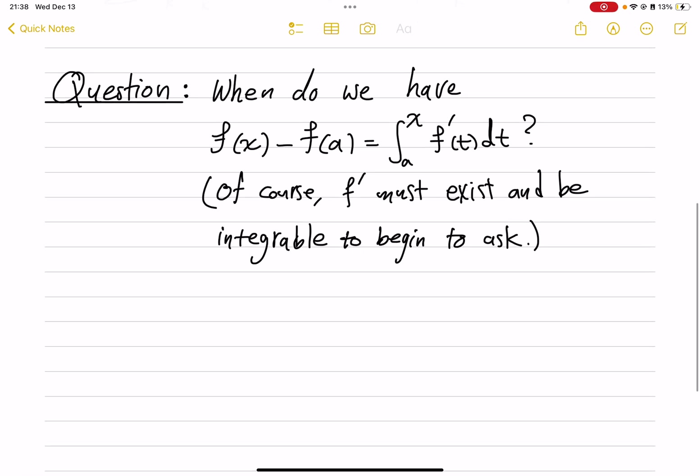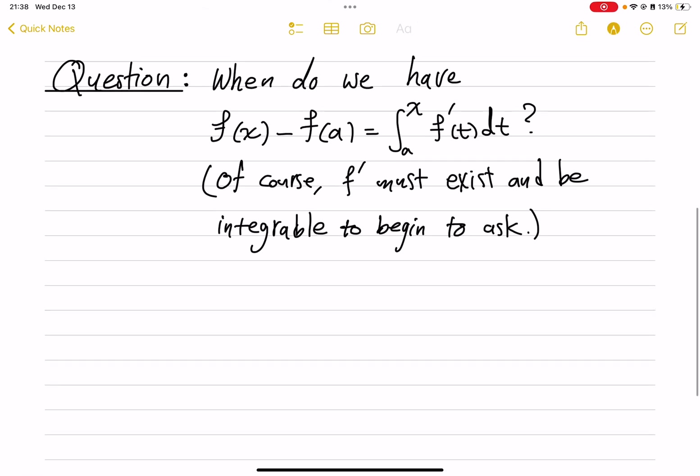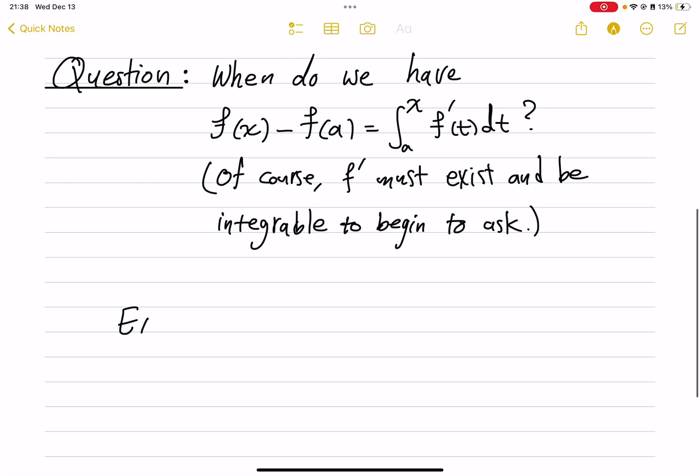There are easy examples to show that this is not always true. For example, Example 1: let me just give you a constant function. Suppose you have, up to this point, this function, and then a different constant value after that. So we see that f prime exists almost everywhere and is integrable, being the 0 function.